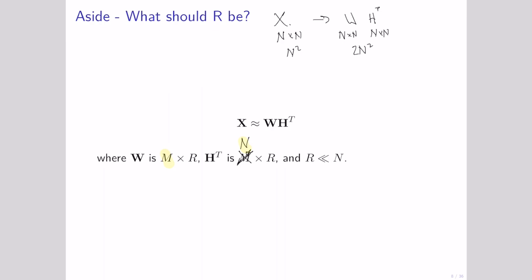But what this tells us is that if we're going from X to even more numbers, clearly it should be possible to exactly reproduce X. In fact, we can do that by factoring X into the identity matrix times X, which is clearly just X. So we can always determine an R — a number of components — that will exactly reproduce X.